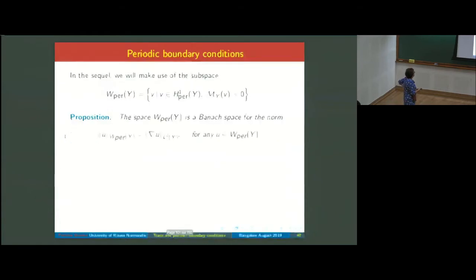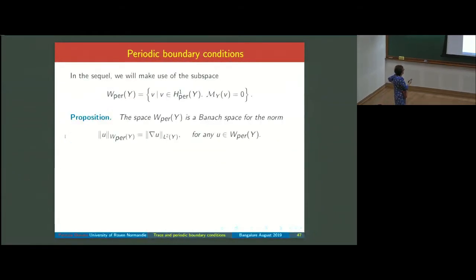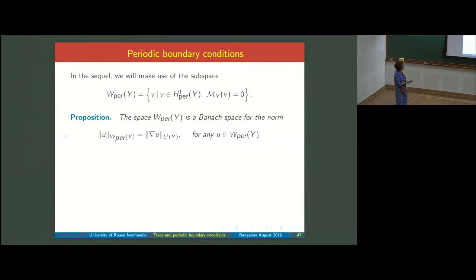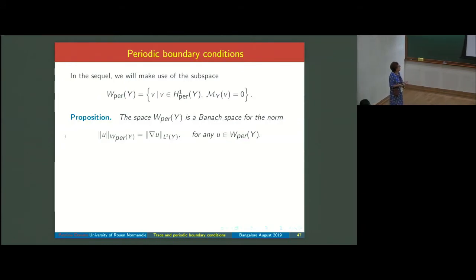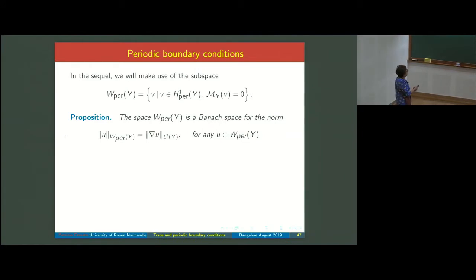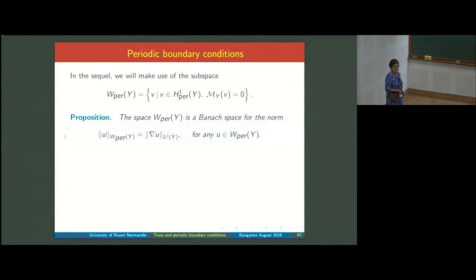We use the subspace of H^1-periodic functions with zero mean on the reference cell. One can show that for functions in W_{per} there is an inequality like Poincaré's: we can estimate the function by the gradient, so the gradient is an equivalent norm to the full W_{per} norm.